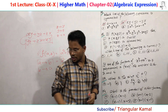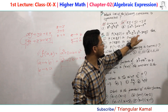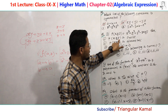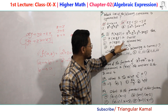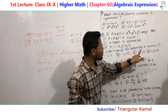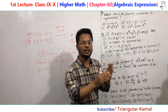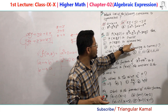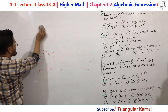In MCQ number two, p(x,y,z) = x³ + y³ + z³ - 3xyz. Three statements are given: first, p(x,y,z) is cyclic; second, p(x,y,z) is symmetric; third, p(1, -2, 1) = 0. We need to determine which information is correct. We already discussed symmetric; now let's discuss cyclic order and the difference between cyclic and symmetric.